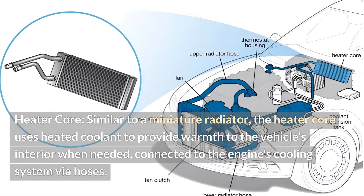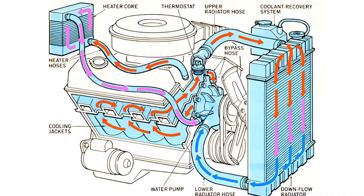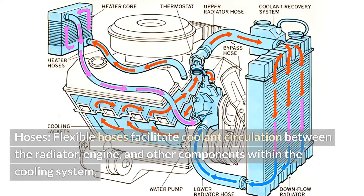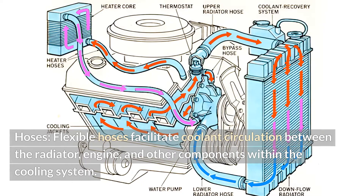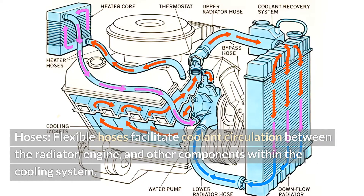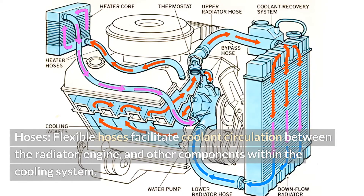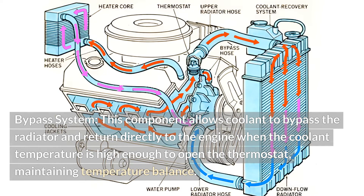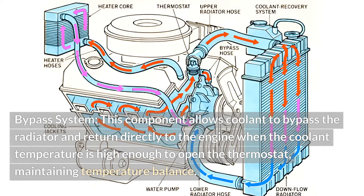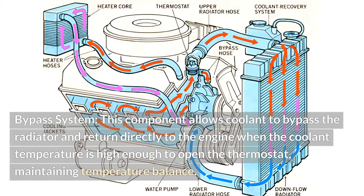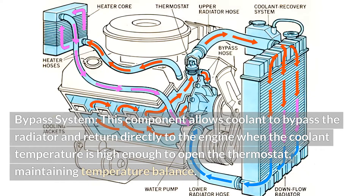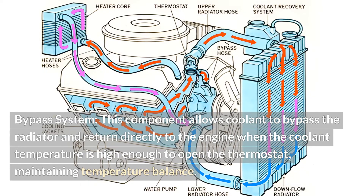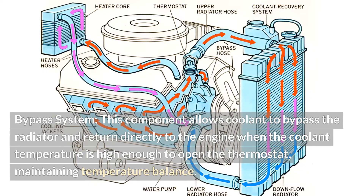The heater core is connected to the engine's cooling system via hoses. Hoses: Flexible hoses facilitate coolant circulation between the radiator, engine, and other components within the cooling system. Bypass system: This component allows coolant to bypass the radiator and return directly to the engine when the coolant temperature is high enough to open the thermostat, maintaining temperature balance.